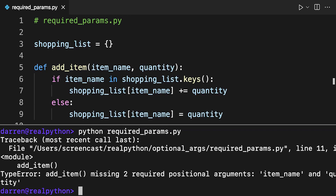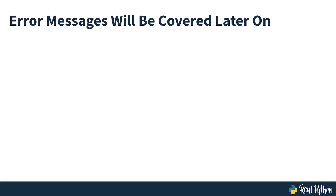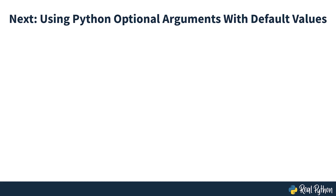The traceback will give a type error stating that the arguments are required. You'll look at more error messages relating to using the wrong number of arguments or using them in the wrong order later on in this course. But in the next section, you'll see how to create more flexible functions by adding optional arguments.